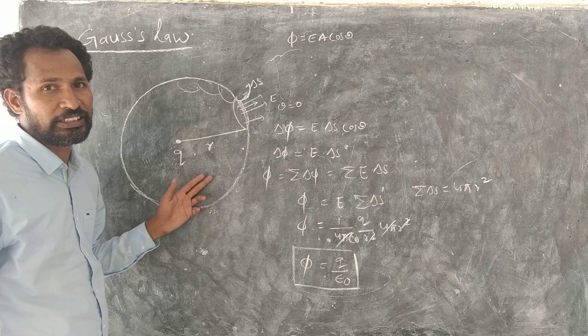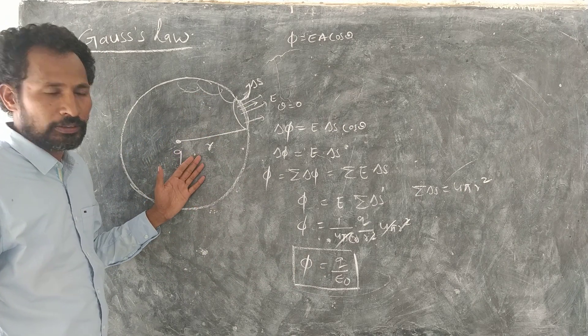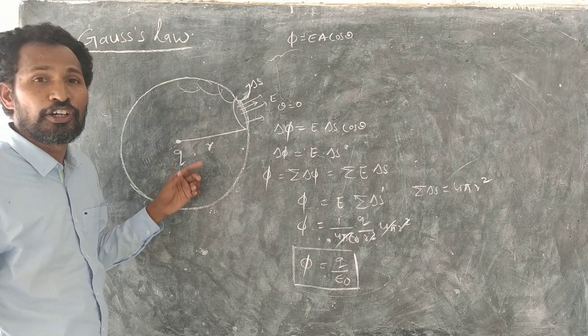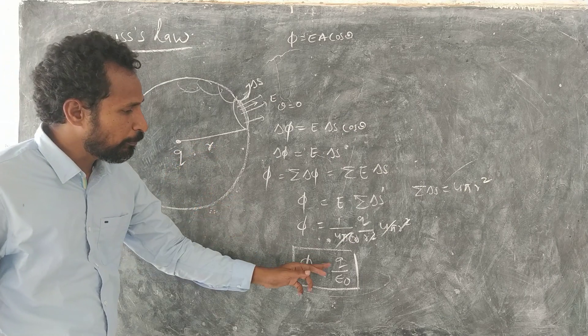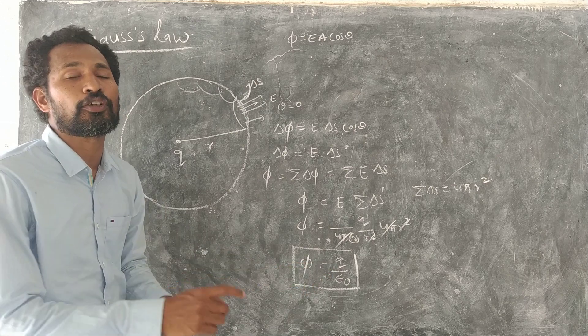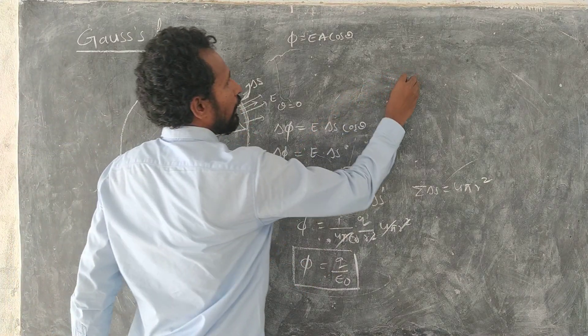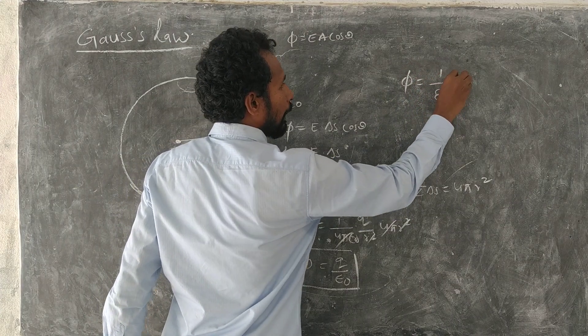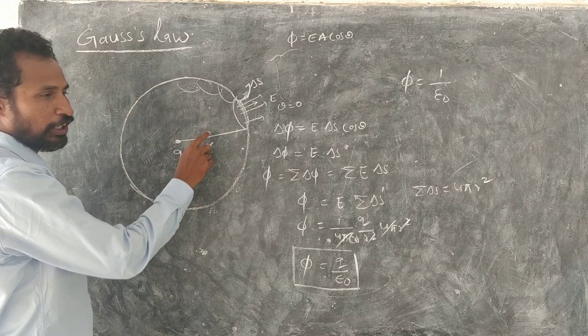1 by epsilon 0 times of total charge enclosed by this surface. Gauss's law states that flux through any closed surface is equal to 1 by epsilon naught times of total charge enclosed by the surface. Phi is equal to 1 by epsilon naught times of total charge enclosed by the surface.